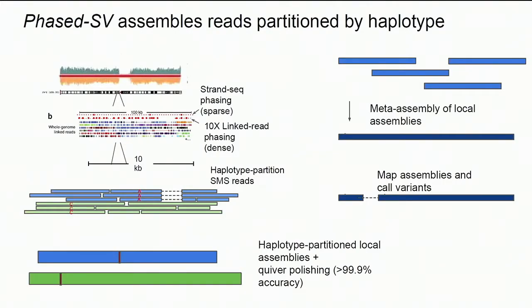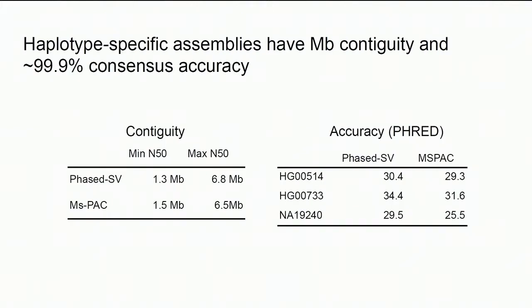Given phased heterozygous SNPs, reads are aligned back to the genome, partitioned by haplotype, each haplotype assembled separately, and variation called from those assemblies. On somewhat early data, assemblies had N50s between 1.3 to 7 megabases per haplotype; with newer data we get around 20 megabase N50s per haplotype — rivaling the contiguity of the original human genome release. Applying consensus methods yielded about QV30 (99.9% accurate) assemblies using only PacBio input, with further accuracy gains by adding an Illumina polishing step.